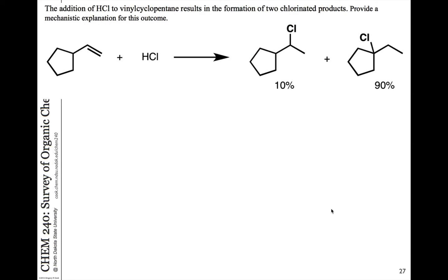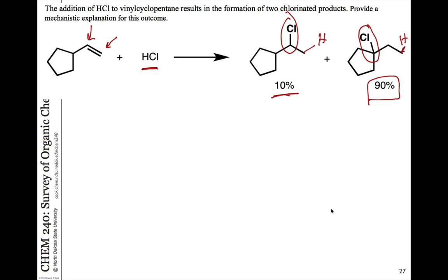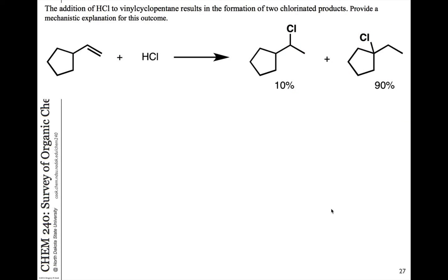Let's look at another aspect of electrophilic addition reactions to double bonds. If we take a double bond with a less substituted and a more substituted carbon and react with HCl, what's observed is 10% of the expected Markovnikov product — hydrogen on the end carbon, chlorine on the middle carbon. However, the major product results from hydrogen adding to the end carbon but chlorine adding to a more highly substituted carbon further along — a carbon where originally there was only a hydrogen. We have to ask why there's a product where no double bond existed at that position, and the answer is carbocation rearrangement.